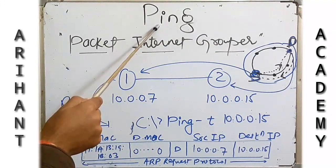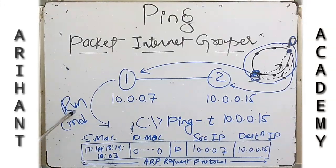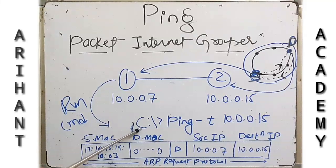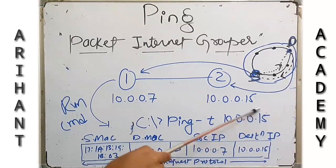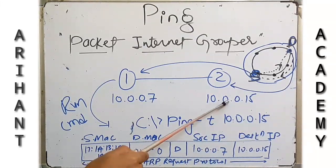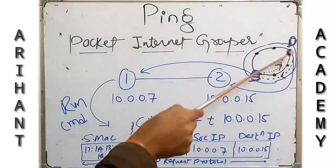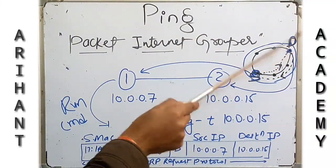There is a command PING. To check, open Run, then type CMD so your command prompt opens. Then type the command: PING -T followed by the IP address of the destination, for example 10.0.0.1 — the IP address of the destination computer you want to check whether it is connected to your network or not.